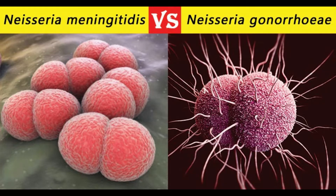6. Plasmids: N. gonorrhoeae usually possesses plasmids coding for drug-resistant genes; N. meningitidis rarely has plasmids. 7. Form: N. gonorrhoeae predominantly exists in intracellular form; N. meningitidis exists in both intracellular and extracellular forms. 8. Movement: N. meningitidis moves faster with a larger number of retracting pili. 9. Growth on blood agar: N. gonorrhoeae grows less well on blood agar than N. meningitidis.